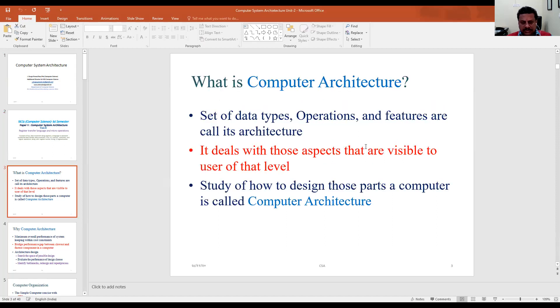What is Computer Architecture? Set of data types, operations and features are called its architecture. It deals with those objects that are visible to user level. And also, it is study of design of those parts of computers which actually work in the motherboard.